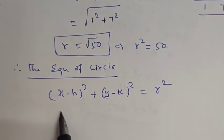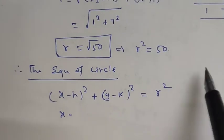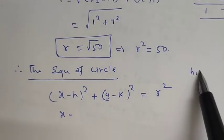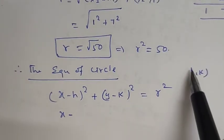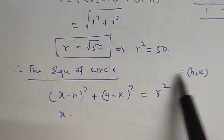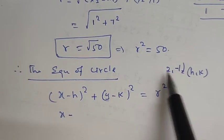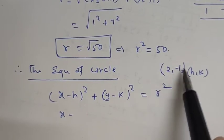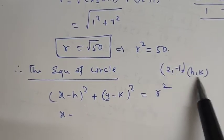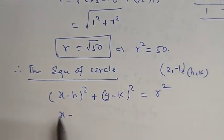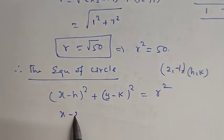Now, the center of the circle is (2, -1). So h is equal to 2 and k is equal to minus 1.